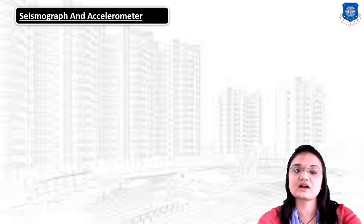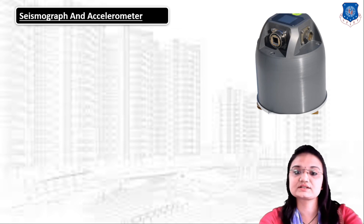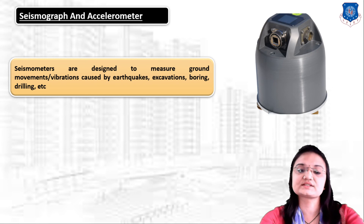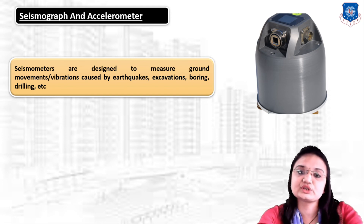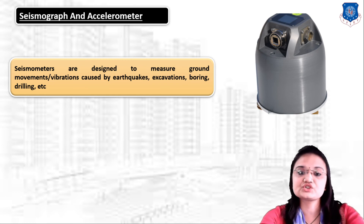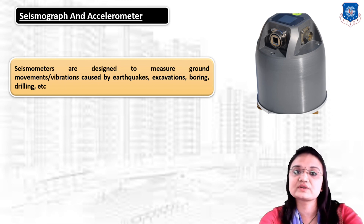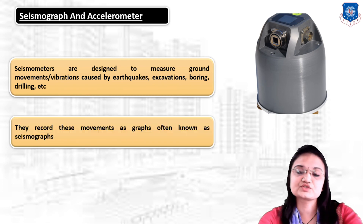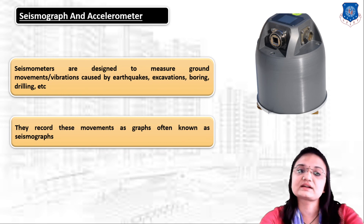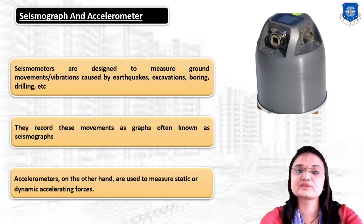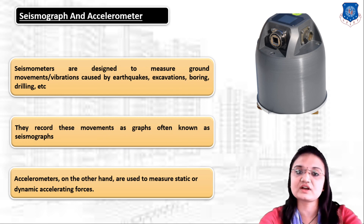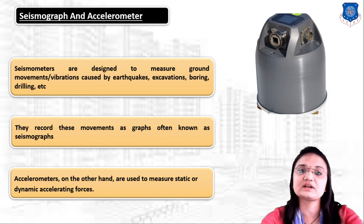Next are the seismograph and accelerometers. Seismographs are designed to measure ground movement and vibration caused by earthquakes, excavation, borings, and drillings. The seismograph records this movement and vibration in graph form. An accelerometer is generally used to measure static or dynamic acceleration force. So the difference is: the seismograph measures vibration and ground movement from earthquakes, excavation, and drilling, while the accelerometer measures static and dynamic acceleration force.